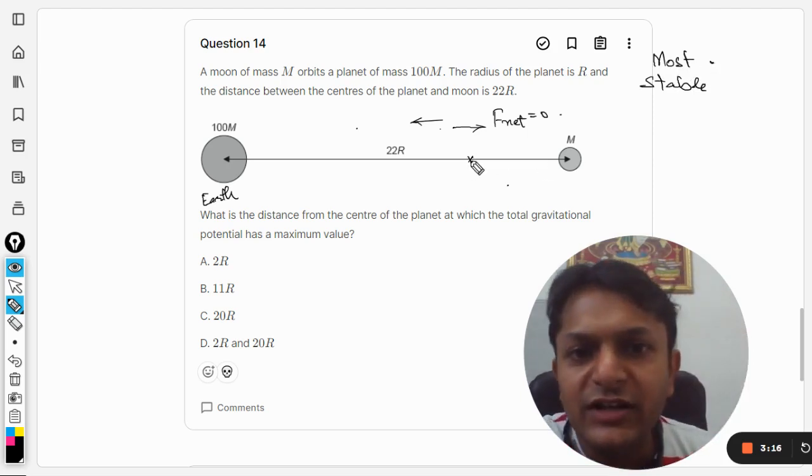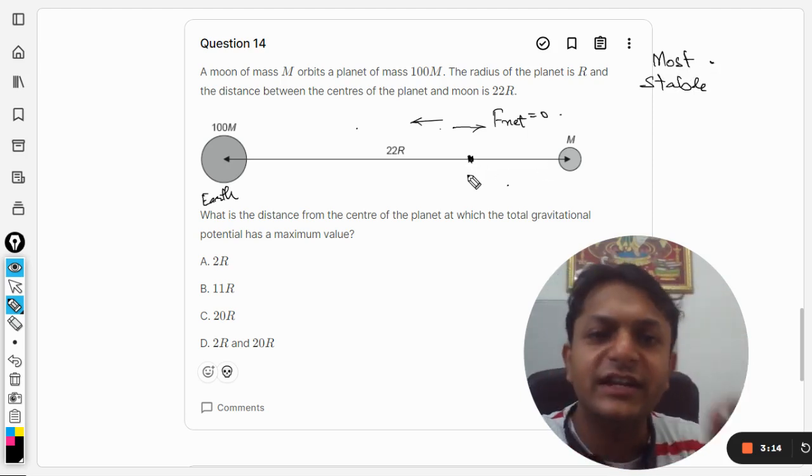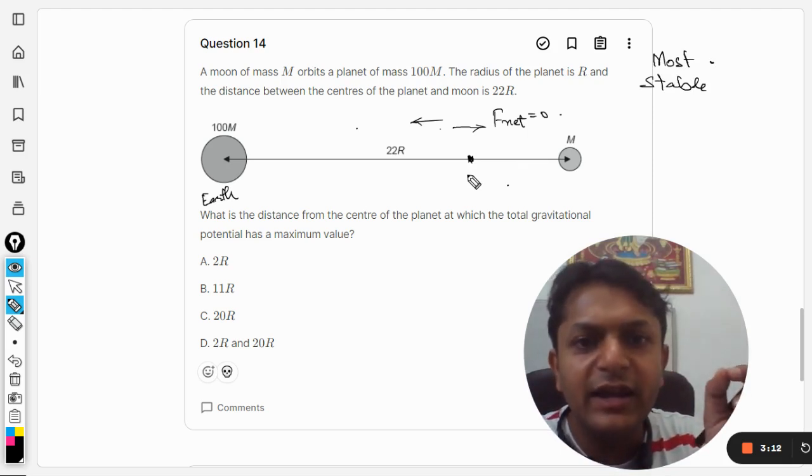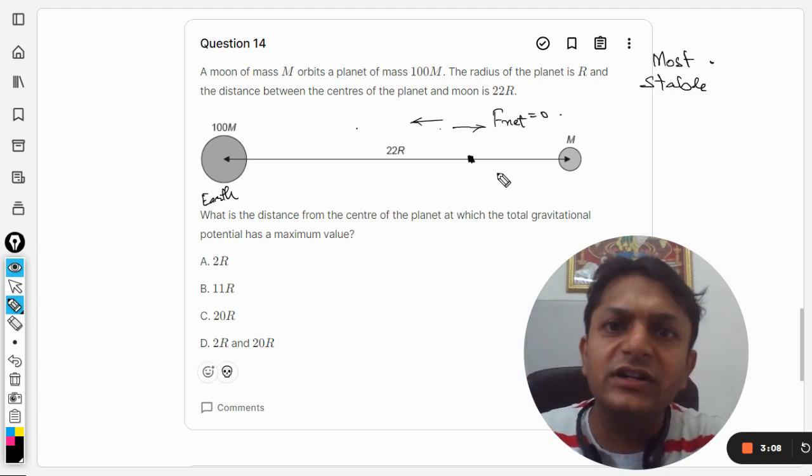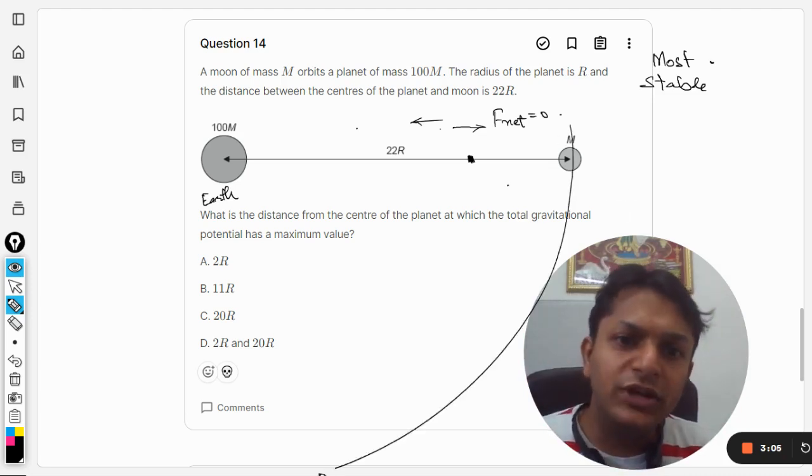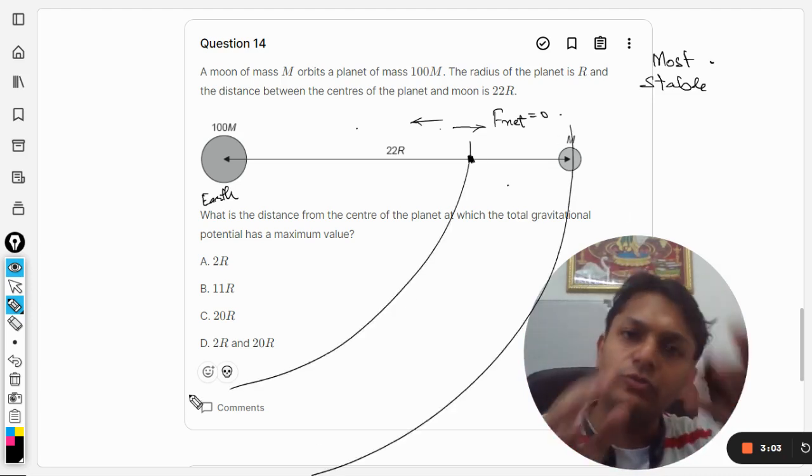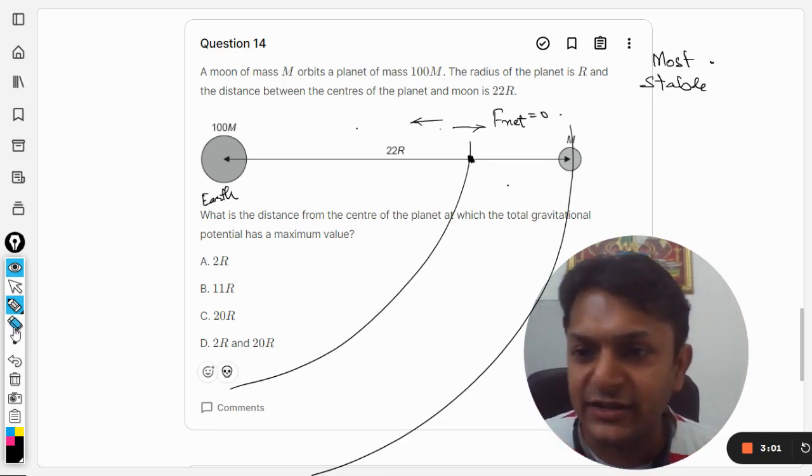Most stable position. Even a satellite can reach this point and remain at this point, just hanging around like this, neither going towards the Earth nor going towards the moon. Even that is possible. As the moon keeps on changing position, the satellite will also move along.